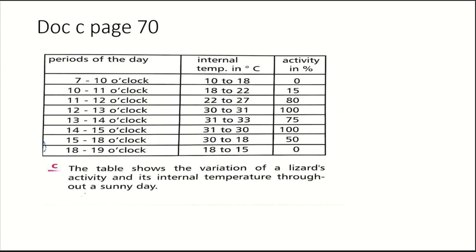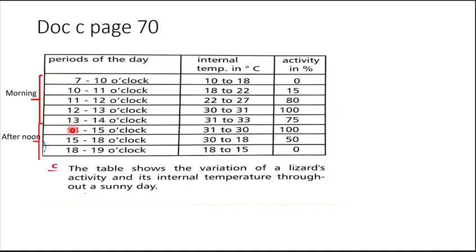Document C shows the variation of the lizard's activity and its internal temperature over a sunny day. We can notice that from morning till noon — from 7 to 14 o'clock — the temperature is increasing from 10 to 33 degrees Celsius. While in the afternoon, from 14 o'clock till 19 o'clock, the temperature decreases.